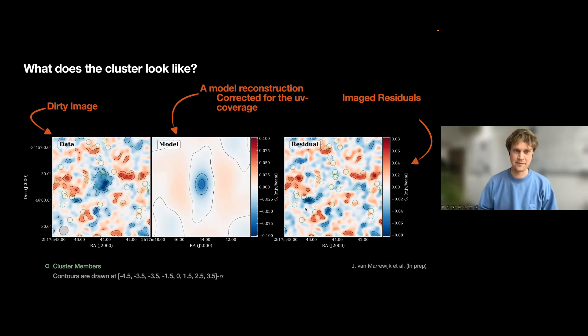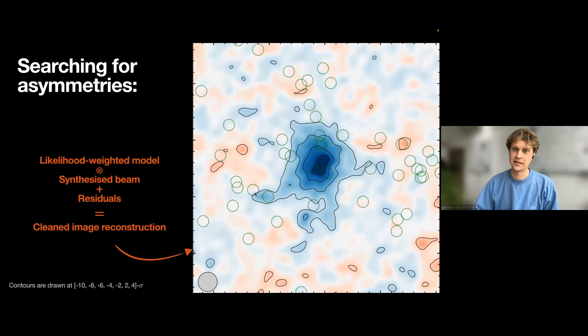We've tried to make a cleaned image of our ALMA but using extended emission. Instead of correcting this model here by UV coverage, we just get our infinitely smooth pressure distribution, then convolve it with the synthesized beam, similar to how CLEAN operates, and then add it back with the residuals to get a cleaned image reconstruction of extended emission. And this is how the image looks like.